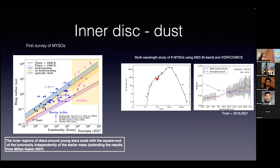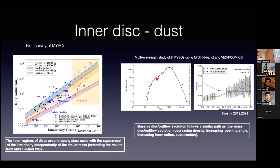There are also multi-wavelength studies being done. This was done by Frost et al. — a really nice study of eight massive young stars using MIDI, the previous interferometer, operating around 12 microns. By fitting simultaneously the SED along with the interferometric observables, they could fit the visibilities. They found first that the massive disk outflow evolution follows a similar path as low mass stars, and importantly they could see substructures — quite a few datasets could not be fitted unless there was some kind of substructure or asymmetry. This needs further data to confirm and to try to image.